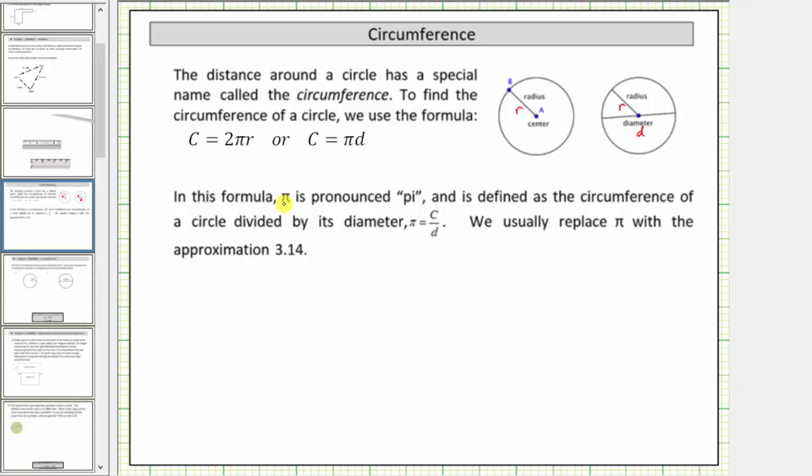In the formula this symbol is pronounced pi and is defined as the circumference of any circle divided by its diameter. So π equals the circumference divided by the diameter for any size circle.